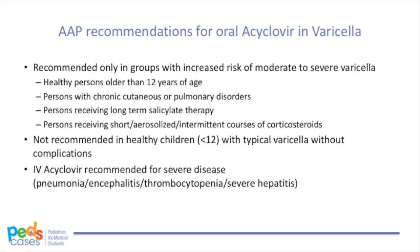Let's talk about the recommendations around acyclovir. The American Academy of Pediatrics recommends oral acyclovir in groups with a higher risk of severe varicella, including healthy persons more than 12 years old, those with chronic cutaneous or pulmonary disorders, those on long-term salicylate therapy, and those on steroids. AAP does not recommend oral acyclovir for young healthy children with chickenpox who are less than 12 years of age. IV acyclovir should be used for immunocompromised hosts with varicella and for severe disease with complications like pneumonia, encephalitis, thrombocytopenia, or severe hepatitis.